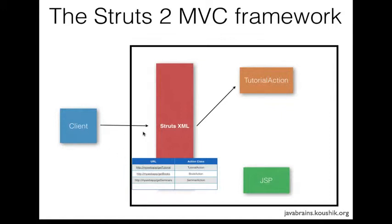So a client makes a request. The struts.xml will have the URL which the client has requested, and it's going to look up which action class needs to execute, then call a method of that action class. This is the first configuration that we're going to make in our struts.xml.